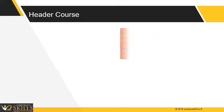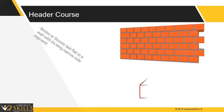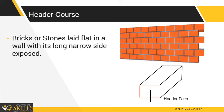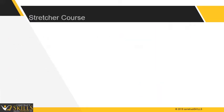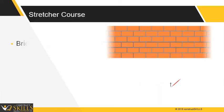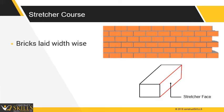Header course: the course of bricks or stones laid flat in a wall with its long narrow side exposed. It is used to build walls greater than 10 inches thick. Stretcher course: the course of bricks laid width-wise. Usually it is used in partition walls.